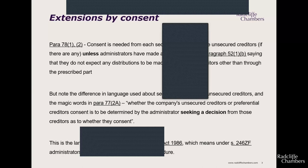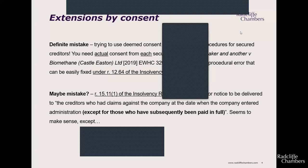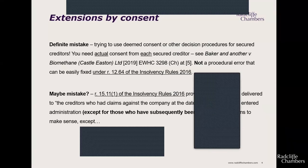Under Section 246ZF of the Insolvency Act 1986, the deemed consent procedure is available for unsecured creditors — being sought collectively as a class — but it does not apply to secured creditors. You must go to secured creditors individually and get their explicit agreement; it is not sufficient to put up a notice with a period for objection and assume silence means consent. Attempting to use deemed consent with secured creditors is not a procedural error that can be fixed under Rule 12.64 of the Insolvency Rules.